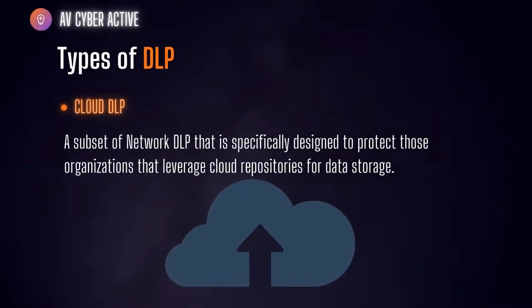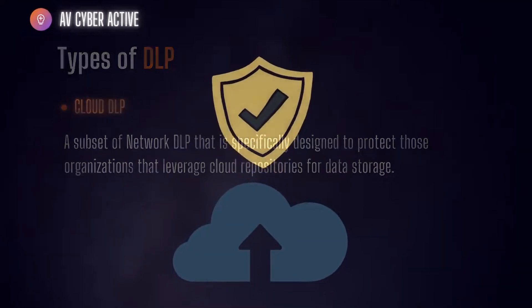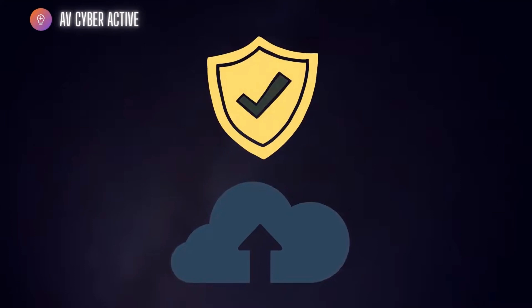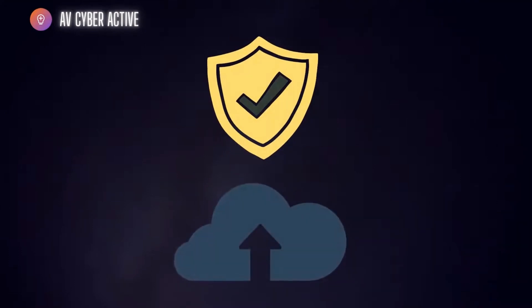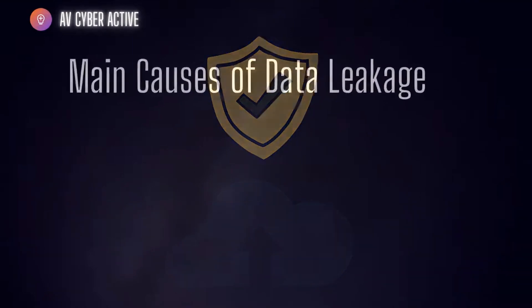The third type is cloud DLP, which is very popular nowadays. It is a subset — not a separate type — of network DLP, specifically designed to protect organizations that leverage cloud repositories for data storage. Cloud DLP scans and audits data on the cloud to automatically detect and encrypt sensitive information before it is admitted and stored in the cloud.